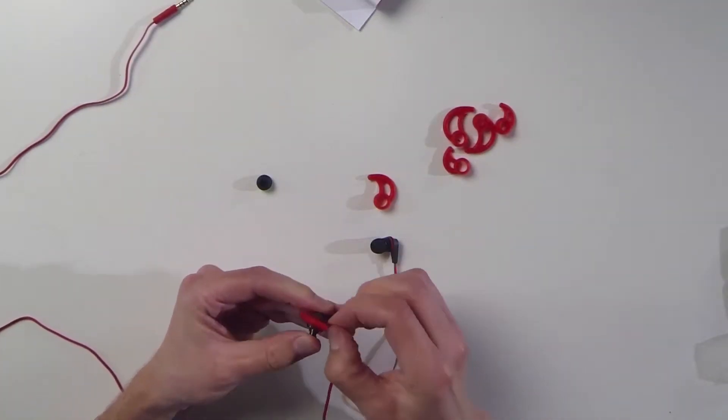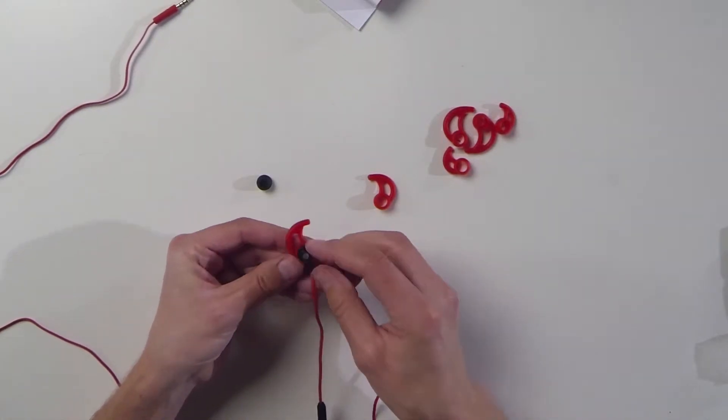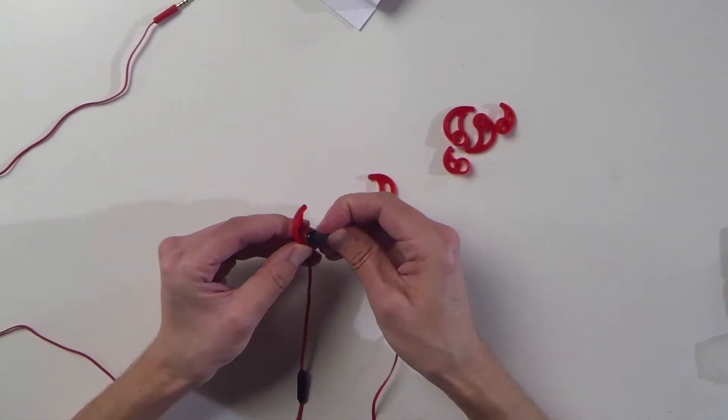Make sure that it is smooth all around with no folds. Adjust the wing so that the front part of it is at the top of the earbud. Now replace the ear tip.